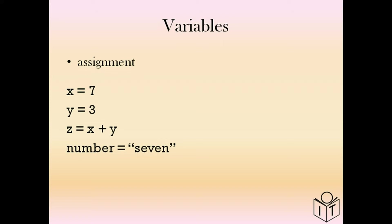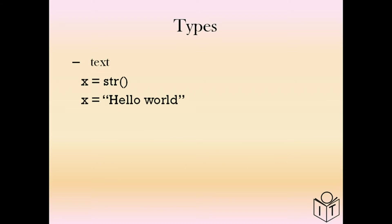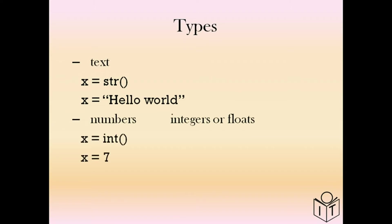These are called types. The main types are: for text, strings; and for numbers, either integers — whole numbers like 1, 2, 10, or something like minus 1 — or if there's a decimal point, like in currency for example, you use floating point numbers called floats. So in text you use string (str), and in numbers you use integers (int) and floats.